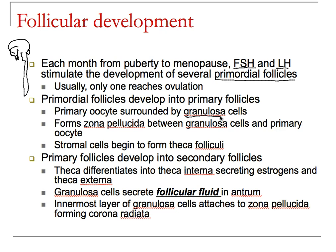The primordial follicles become primary follicles; they become surrounded by granulosa cells, which you'll see both here and in lab. You eventually form a zona pellucida around the oocyte, which begins to protect the development of all these cells. You also have structures called theca folliculi, and these are really important because the theca folliculi make estrogens, and those estrogens drive development. The theca differentiates into a theca interna secreting estrogens and a theca externa. These estrogens drive metabolism: more FSH and LH leads to more estrogens, which drives the development of that follicle and the oocyte inside it.